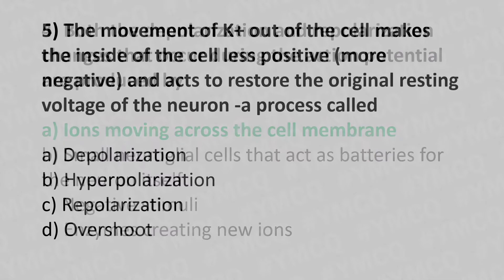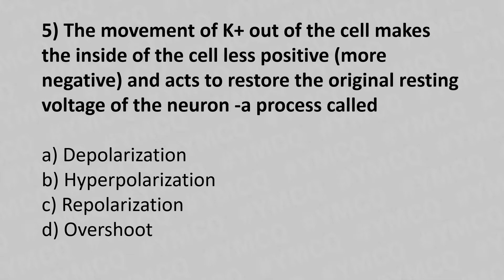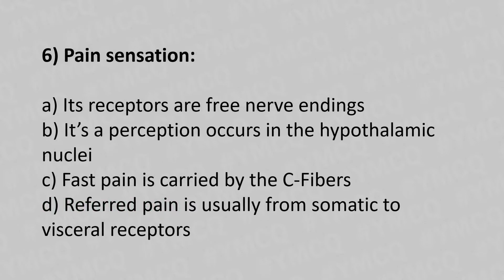Question 5: The movement of potassium out of the cell makes the inside of the cell less positive, more negative, and acts to restore the original resting voltage of the neuron. That process is called — Option A: depolarization. Option B: hyperpolarization. Option C: repolarization. Option D: overshoot. The answer is Option C — repolarization.